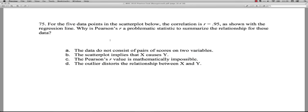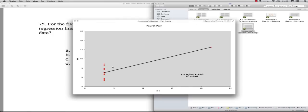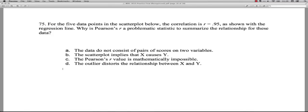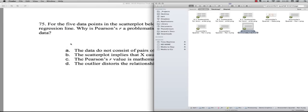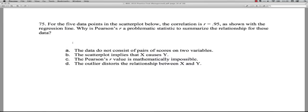Let's take a quick look at the question again. Why is Pearson's R a problematic statistic to summarize the relationship for these data? A says the data do not consist of pairs of scores on two variables. Well, that's not true. Each person has the dot represents a pair. It's just the way things are distributed. B, the scatterplot implies that X causes Y. It's not possible for a scatterplot to do that. That's something that's inferred from the design of the study. C, the Pearson's R value is mathematically impossible. That's not true. 0.95 is possible. It doesn't happen very often because it's very high, but it can happen. And then D, the outlier distorts the relationship between X and Y. And that one is absolutely correct. It distorts it completely. So for 75, the answer is D. And that is every question on the sample final. And I hope that's going to help you a lot when test time comes around. Thanks for listening.